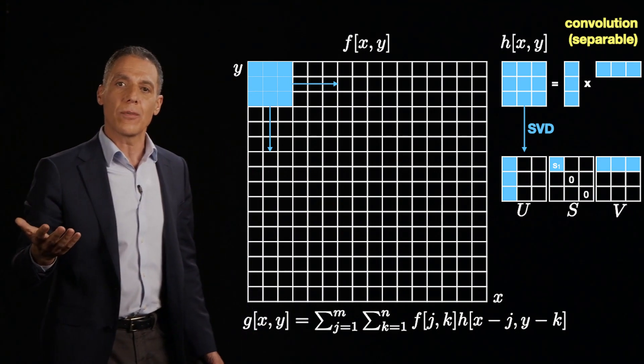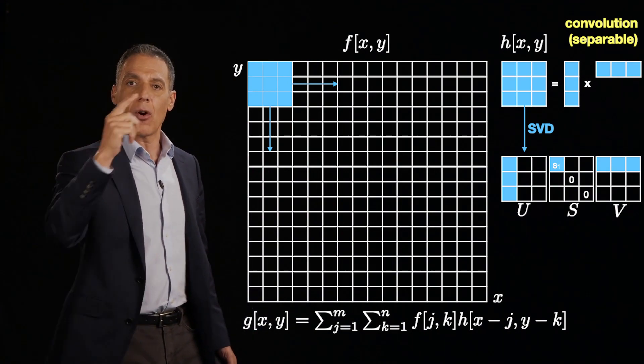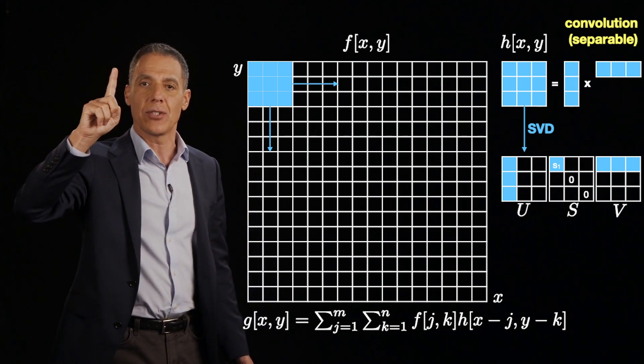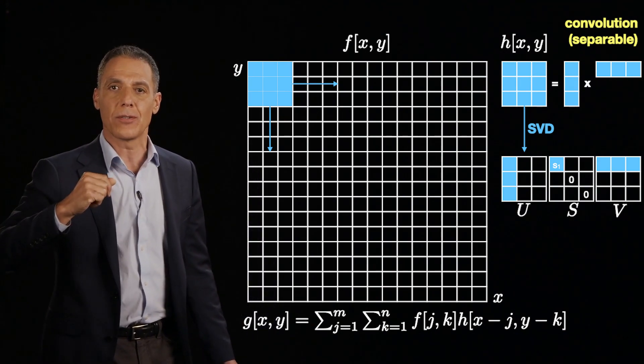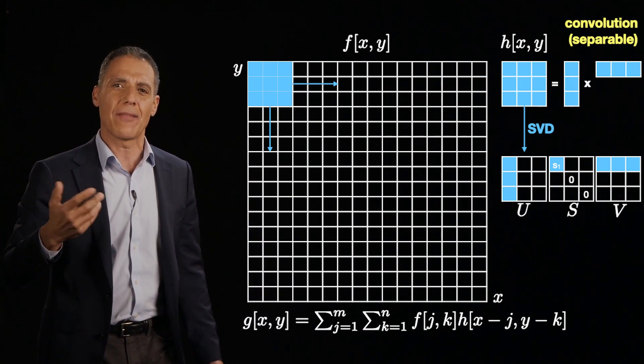And why is that useful? Because now I'm going to convolve with two 1D filters instead of one 2D filter. Let's see what the savings on that is going to be.